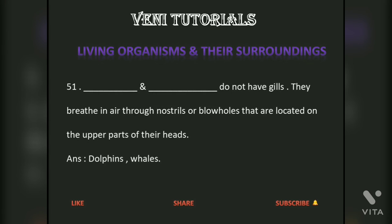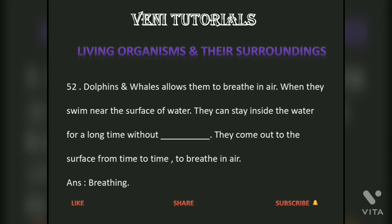Dolphins and whales do not have gills. They breathe in air through nostrils or blow holes that are located on the upper parts of their heads. This allows them to breathe in air when they swim near the surface of water. They can stay inside the water for a long time without breathing, coming out from time to time to breathe in air.